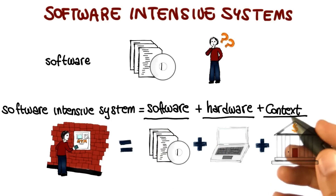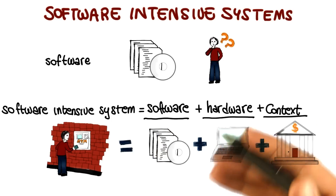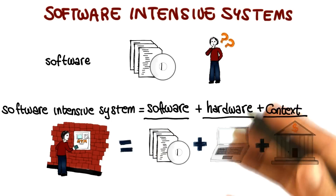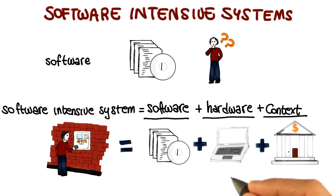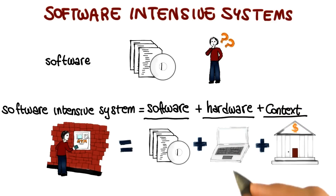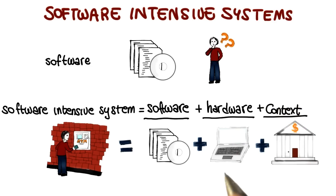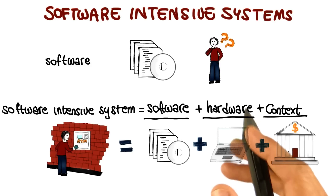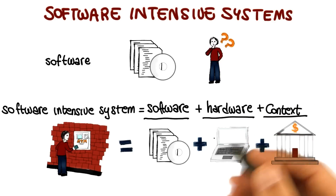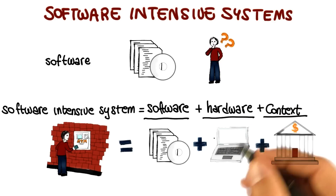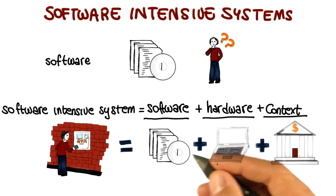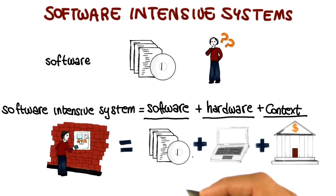The bottom line here is that we usually take hardware and context for granted in this equation. But they actually need to be explicitly considered when building a system. Otherwise, we might forget pieces of the functionality, and ultimately of the requirements, and we might end up with the wrong system.